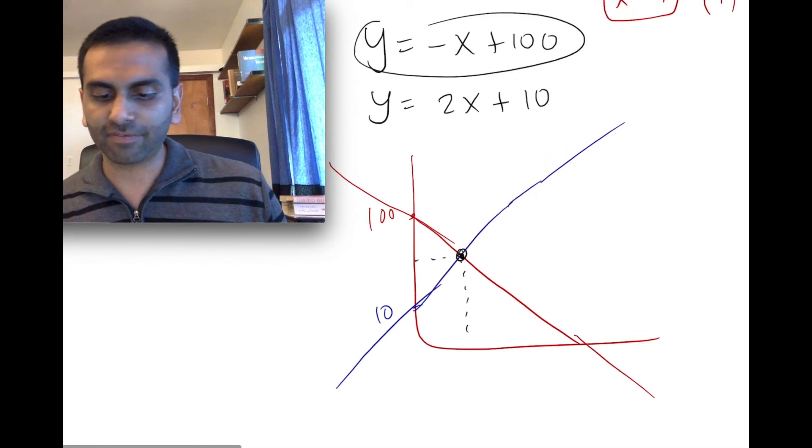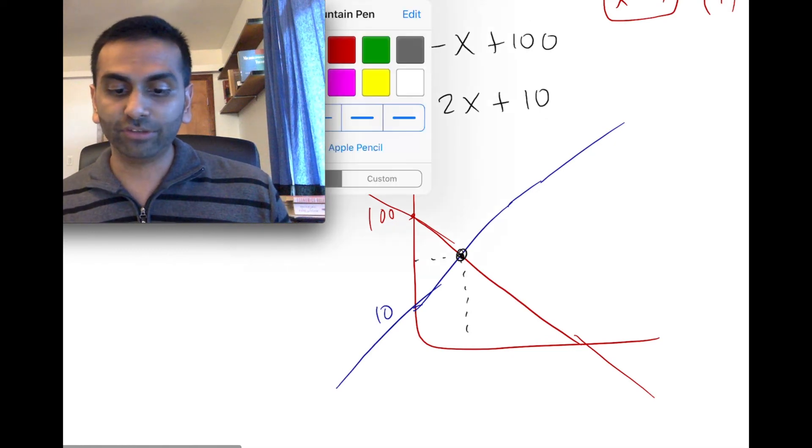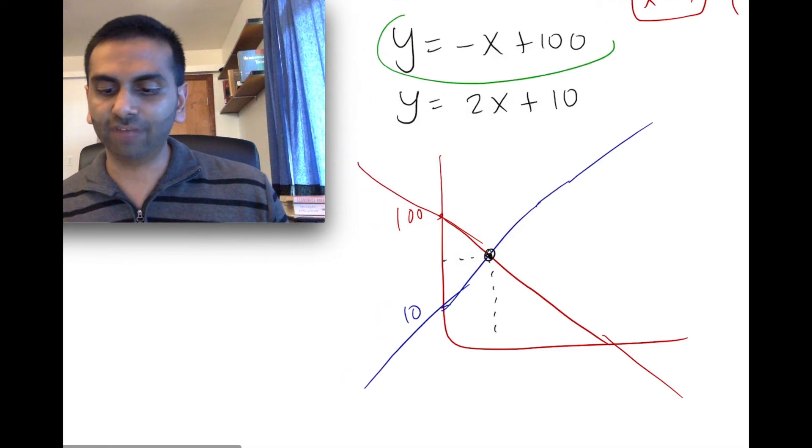So now notice whenever both of them are already in like y equals something, y equals something. When you substitute, again, we're still following the same procedure. It's already solved in this. So we're just going to substitute that in here.